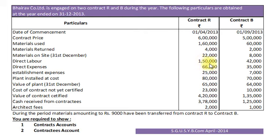Direct Labor Rs. 1,50,000 will be recorded in Contract Account on Debit side. Direct Expenses, Contract Account Debit side Rs. 66,000. Plant installed at cost Rs. 80,000 will be recorded in Contract Account on Debit side. Value of plant on 31st December Rs. 65,000 will be recorded in Contract Account on Credit side under Work in Progress. Cost of contract not yet certified, this is nothing but Cost of Uncertified Work, will be recorded in Contract Account on Credit side under Work in Progress.